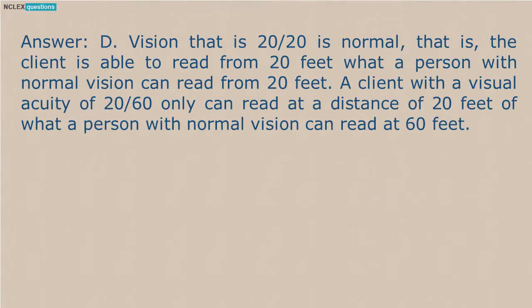Answer: D. Vision that is 20/20 is normal — the client is able to read from 20 feet what a person with normal vision can read from 20 feet. A client with a visual acuity of 20/60 can only read at a distance of 20 feet what a person with normal vision can read at 60 feet. Legal blindness is documented as 20/200 vision.